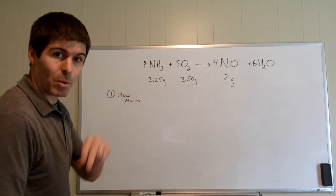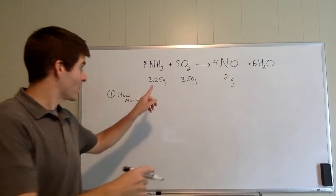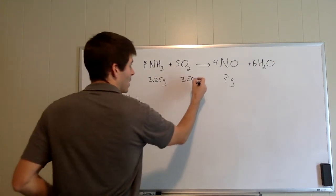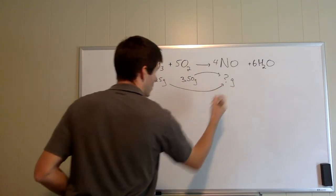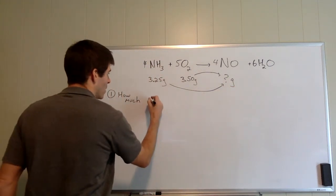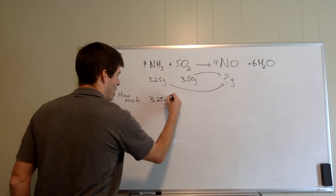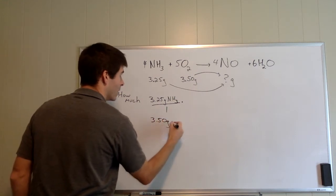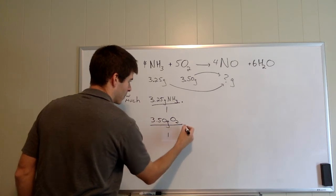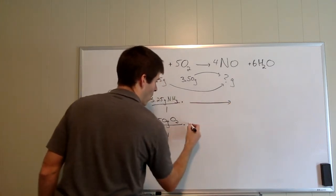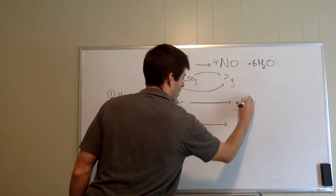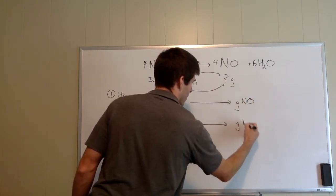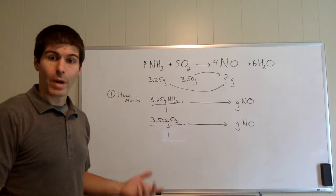To do that we have two separate problems because we have to apply them both ways. How much can the ammonia make? How much can the oxygen make? So we have two separate problems to convert over to there. That's going to be a full dimensional analysis twice. 3.25 grams of ammonia and 3.5 grams of oxygen. We're going to convert both of those all the way until we get grams of NO.